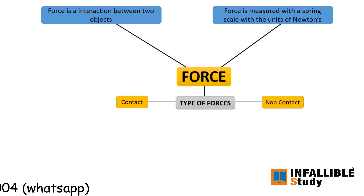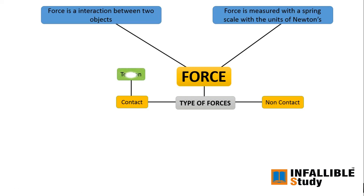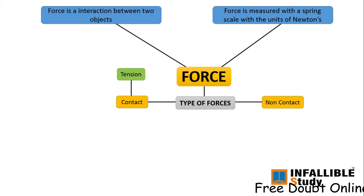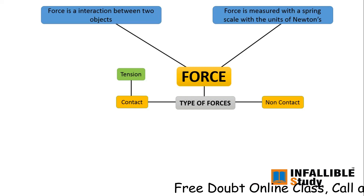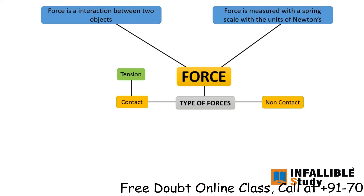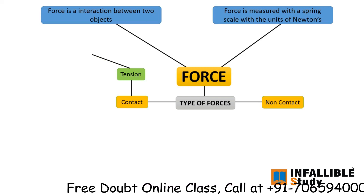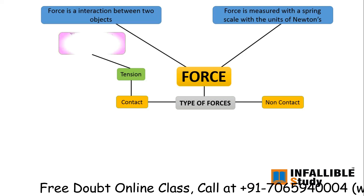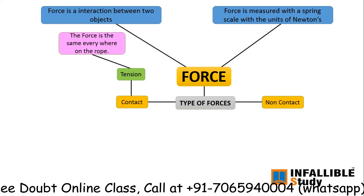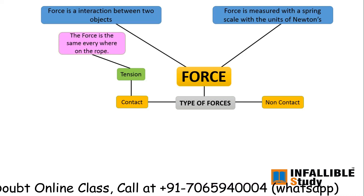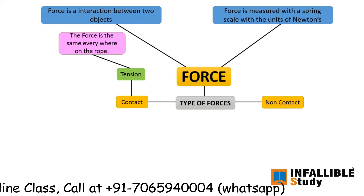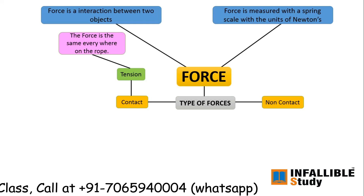Let's talk about contact forces. The first contact force is tension. Suppose when any object is hung by a rope, you see the rope becomes tight and you can feel some force on the rope from that object. That force is called tension. Tension is the same everywhere on the rope.